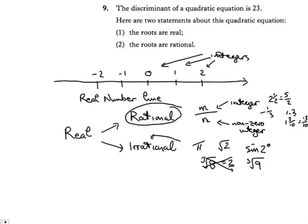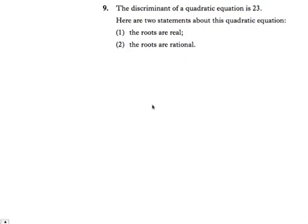So there we have it: two types of real numbers. All real numbers are either rational or irrational — there's no other type. And all real numbers can be represented by points on the real number line. So let's now tackle this question.